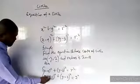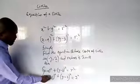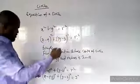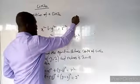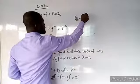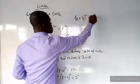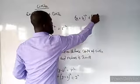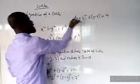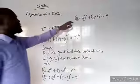If you open it up, this one automatically minus minus will give you plus, so this one will be (x + 3)² + (y - 2)² = 4. That's what you get, then you can expand this.